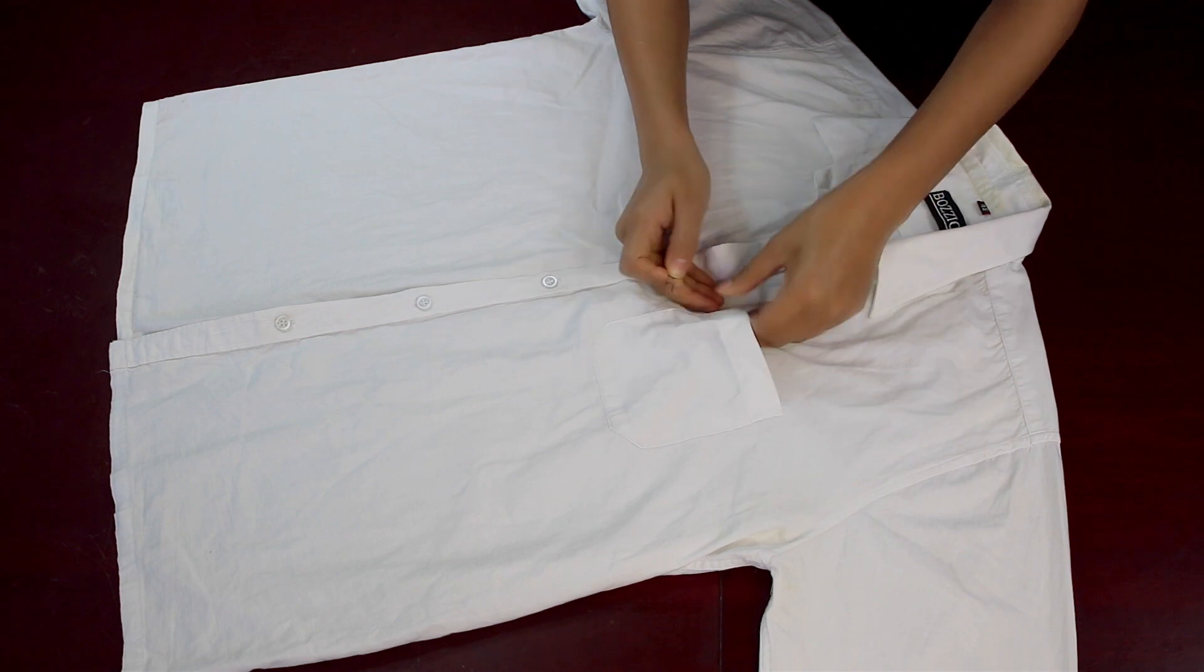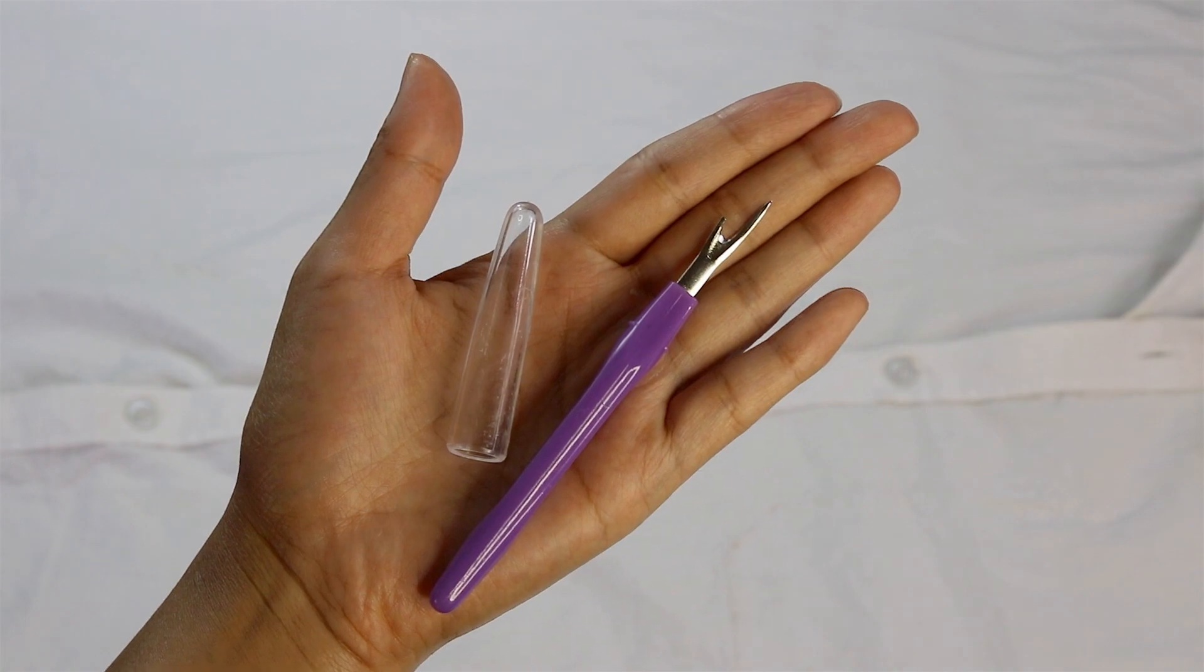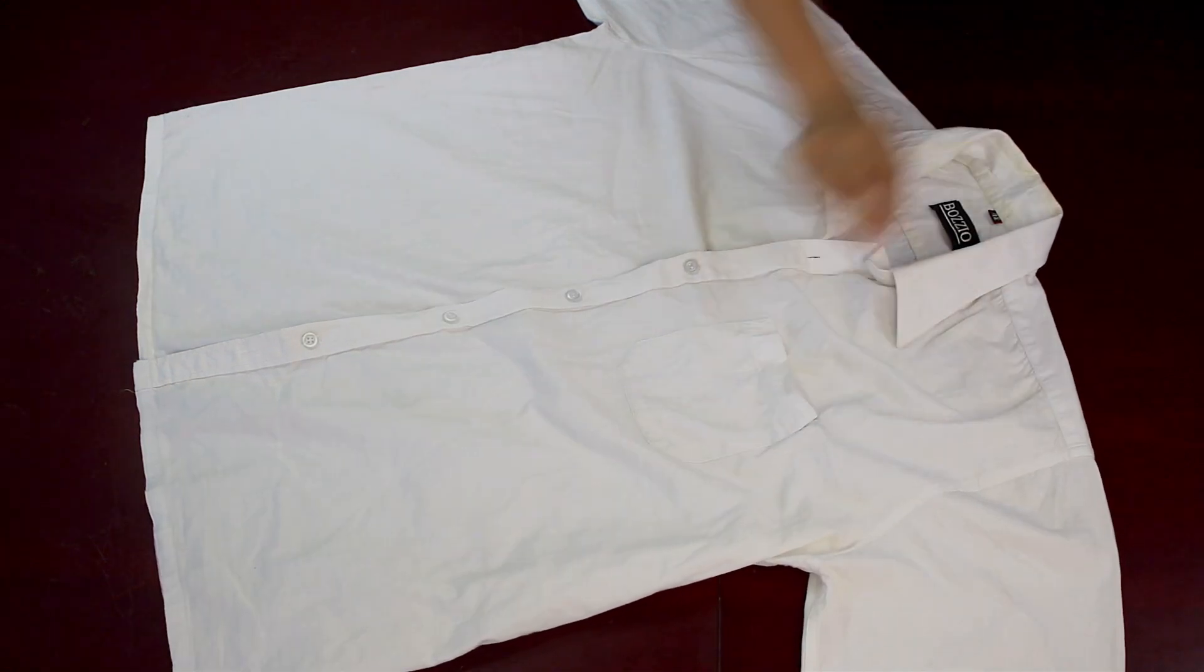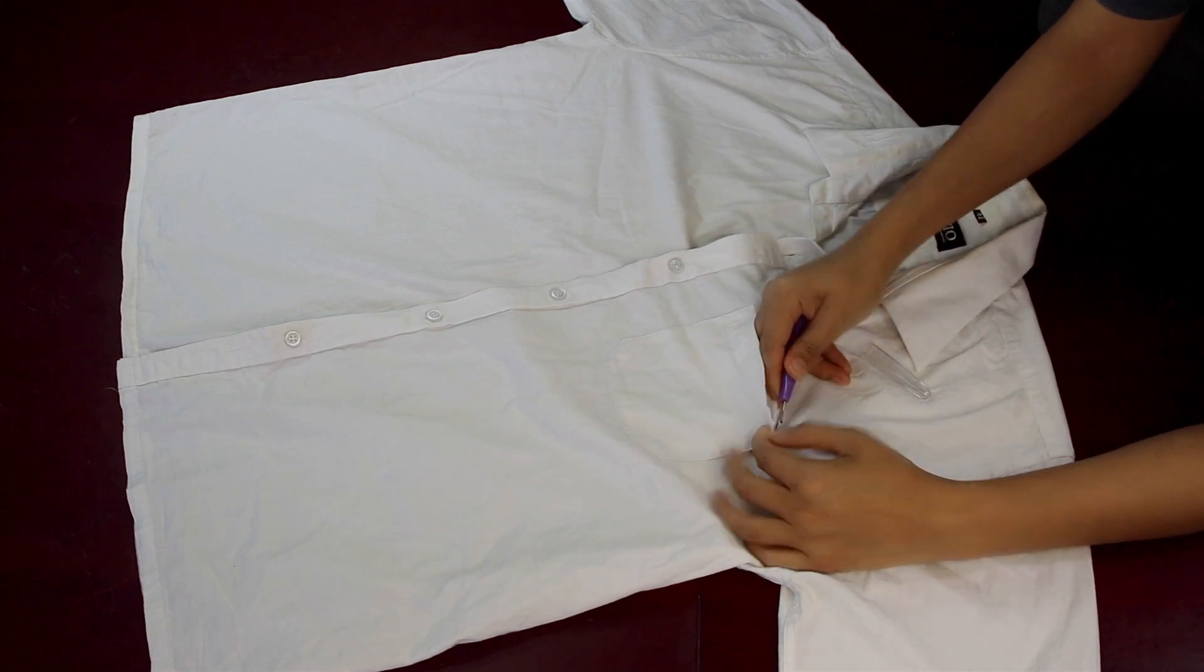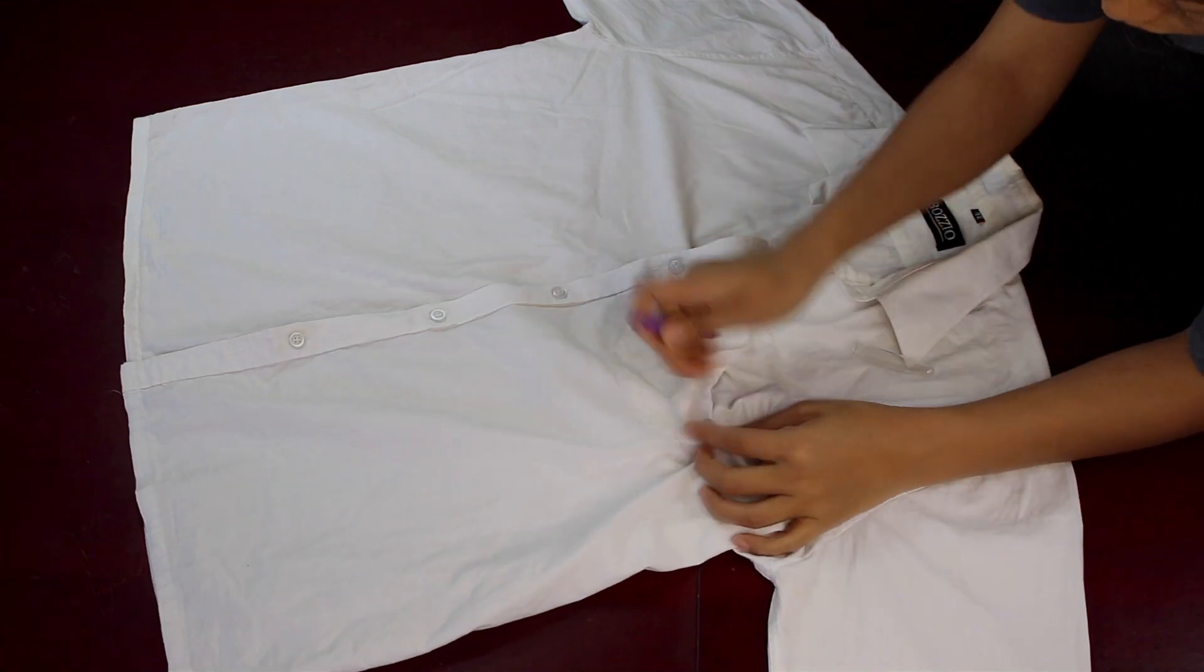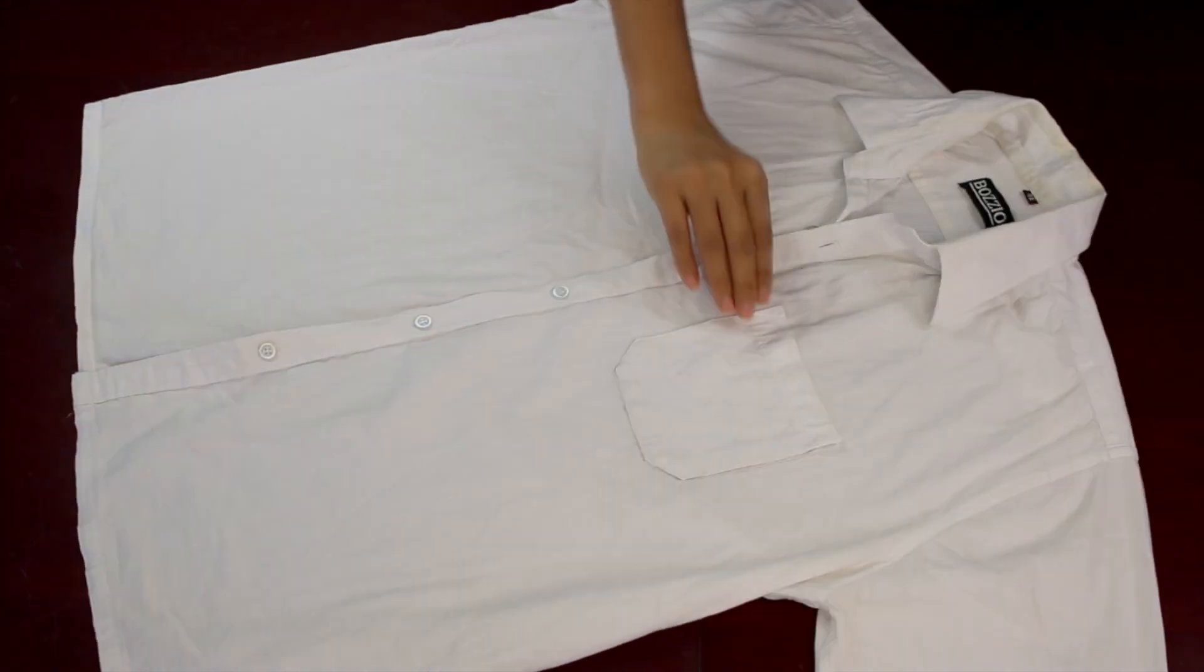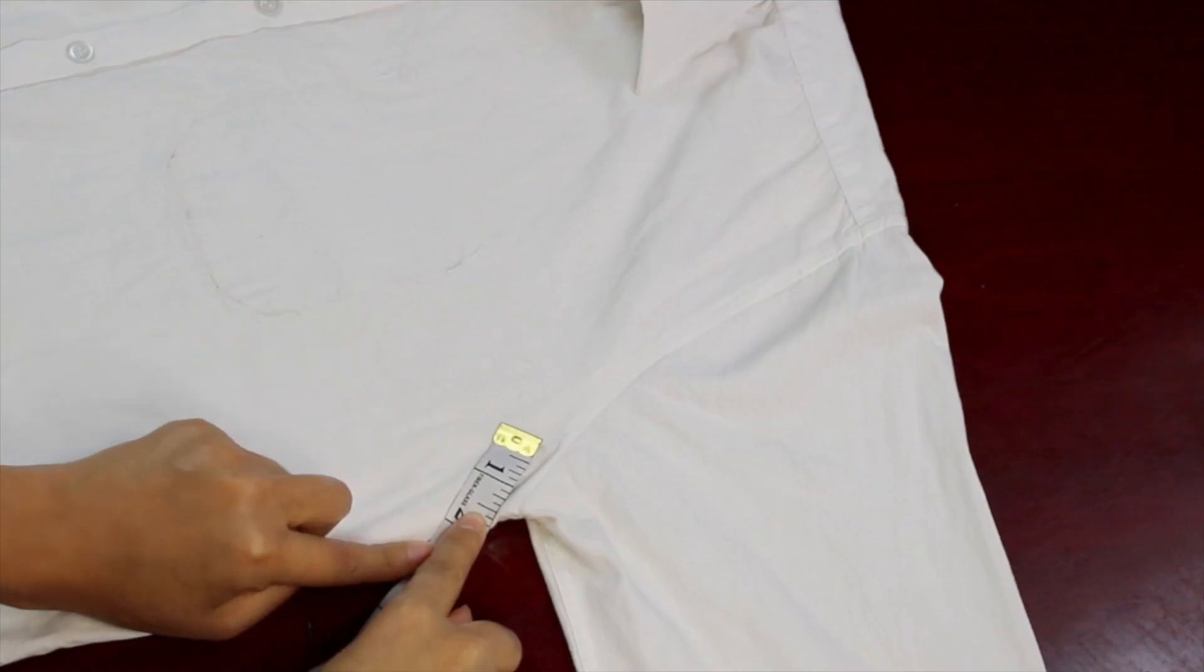First of all, I'm removing the pocket from the shirt as we won't need it. I'm ripping it off with the help of a seam ripper. Now because I don't want to risk damaging the fabric under the pocket, I'm trying to take some edge of the thread out by pulling it carefully. Once one corner is out, I'm pulling the thread little by little. Once the pocket is removed, I'm keeping one and a half inches near the sleeve hole at the bottom.